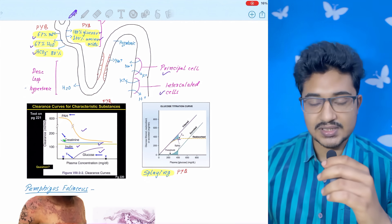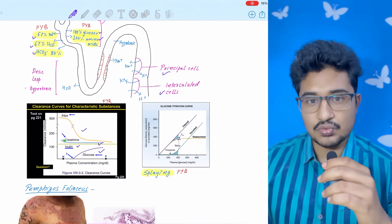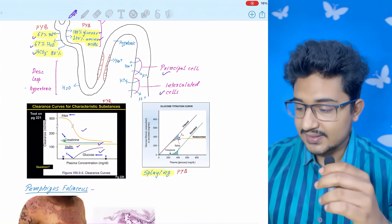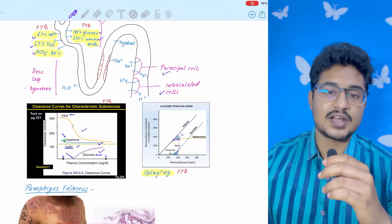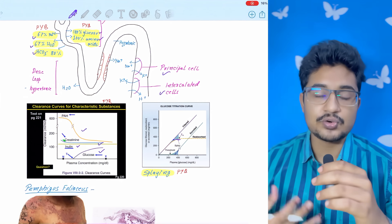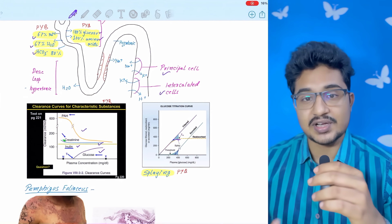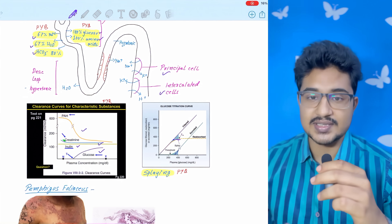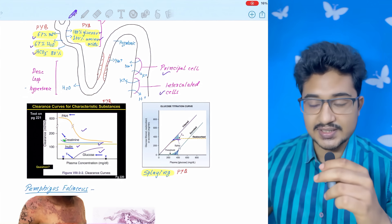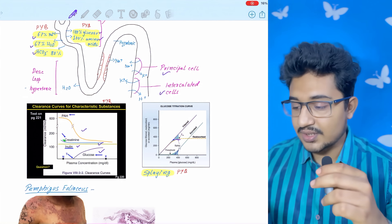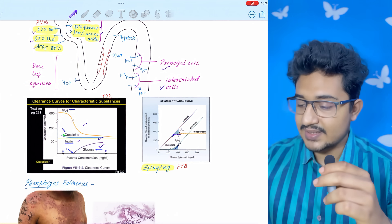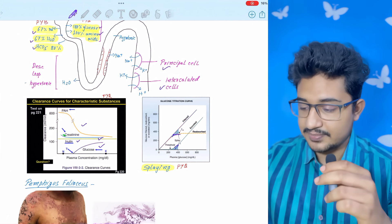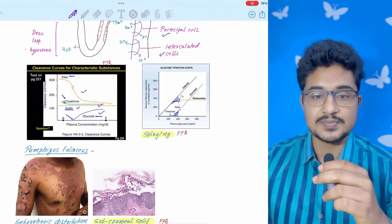After that, glucose is absorbed but after a certain plasma concentration it is excreted. The next important concept is splaying. What is splaying? The excreted and filtered amounts are not at a right angle because of transport saturation. This is called splaying, and this is the reason for splaying.